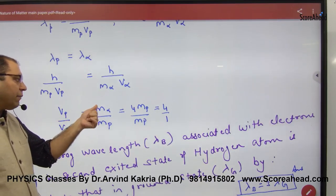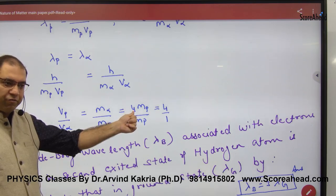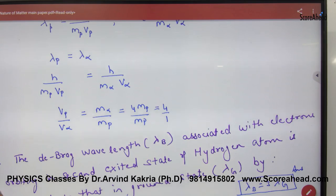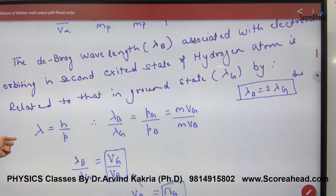In the velocity ratio, the mass of alpha particle is given. It's 4 times proton. Ratio is 4 to 1. Simple question, not difficult.